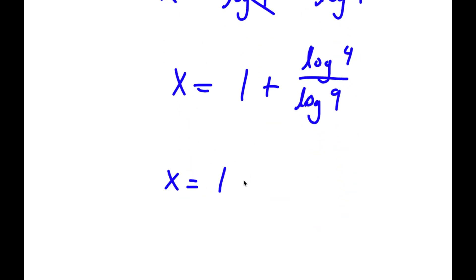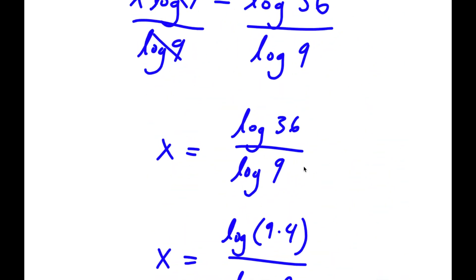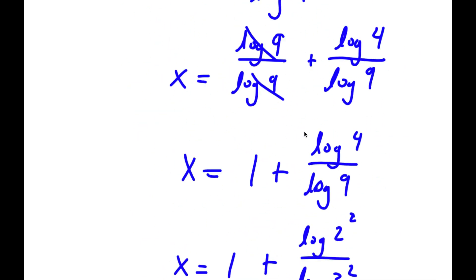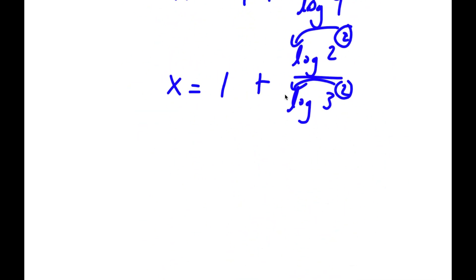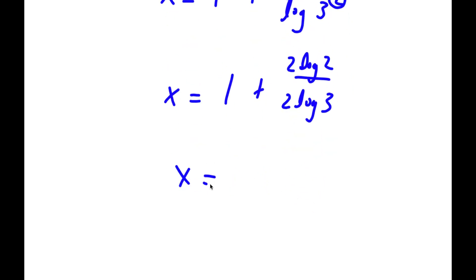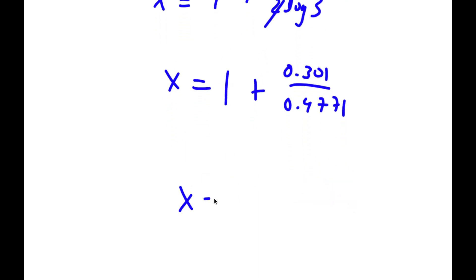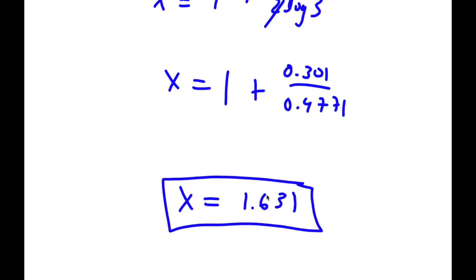Now log 4 is the same as log 2 squared, and log 9 is the same as log 3 squared. Since log a to the power of b equals b times log a, I can move both exponents to the front. So now I have x is equal to 1 plus 2 log 2 over 2 log 3 — and these 2s cancel out. Log 2 equals 0.301 and log 3 equals 0.4771. So solving this, x is equal to 1.631.